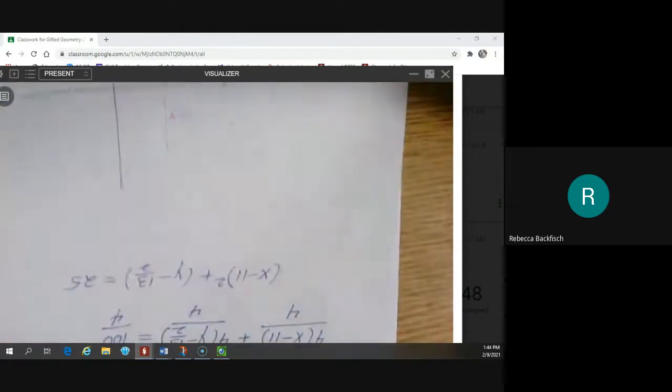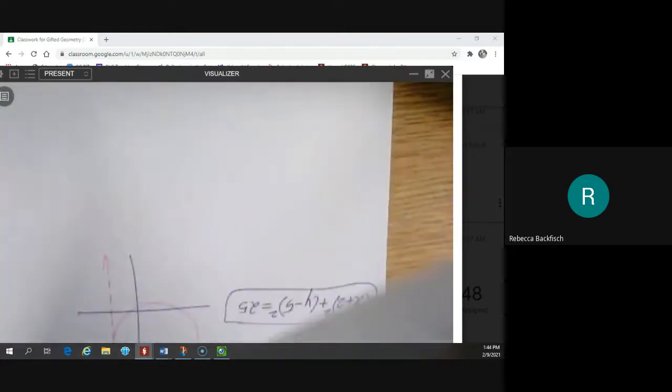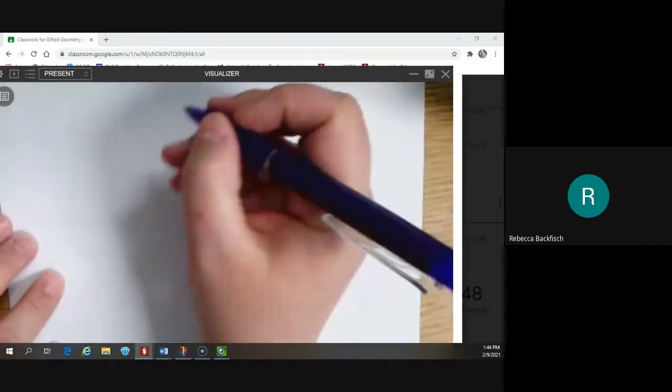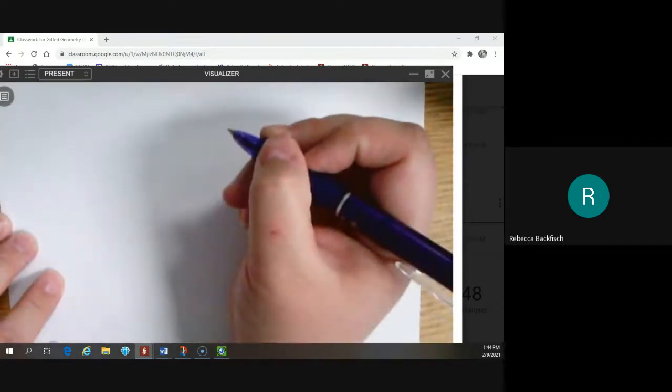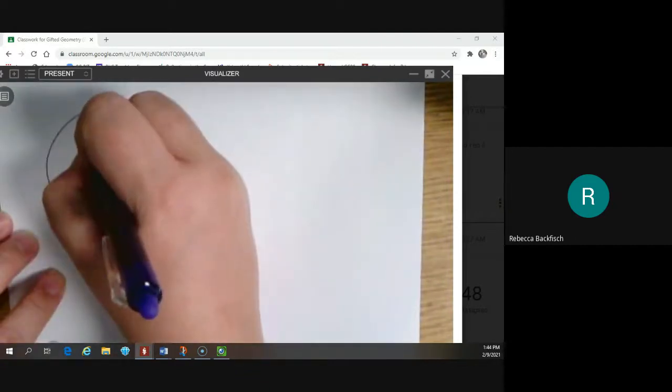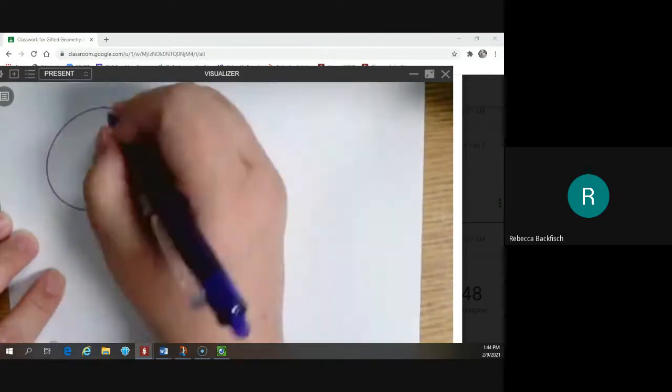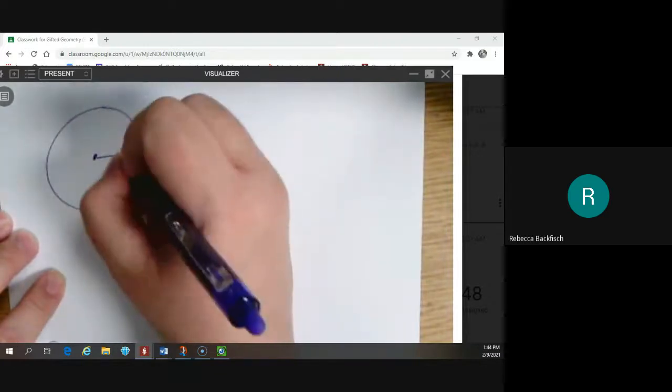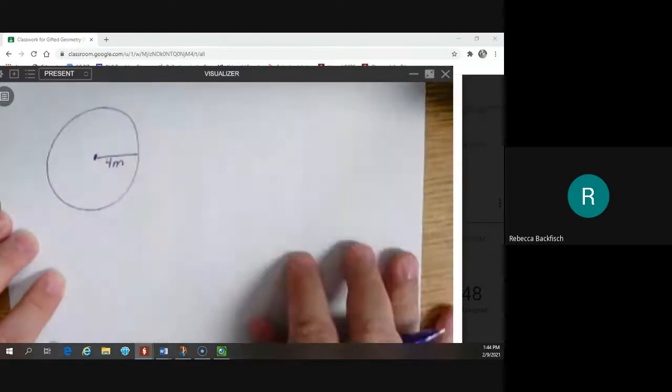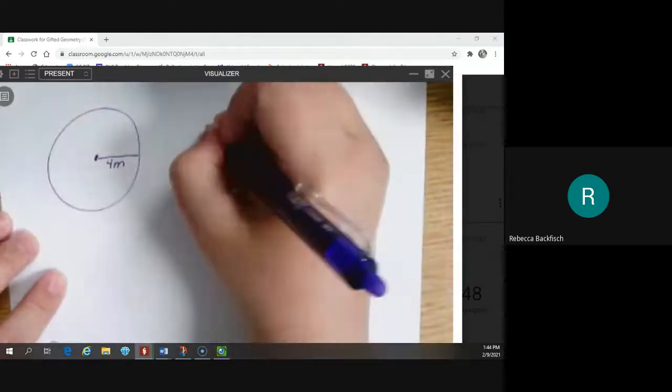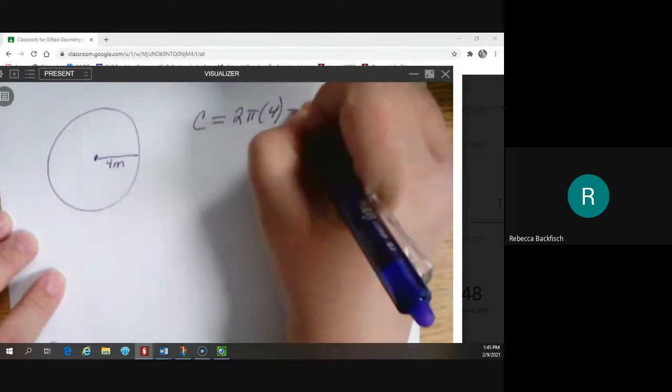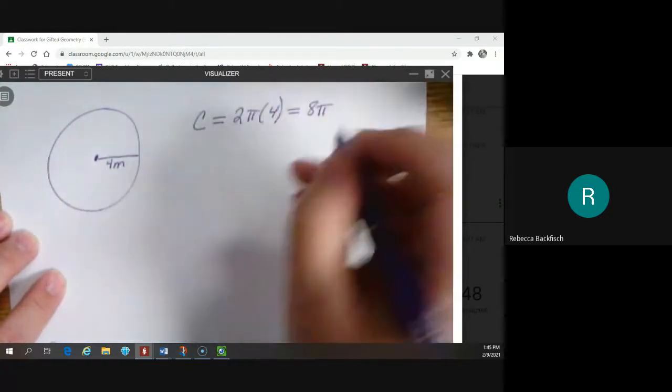We're not going to write anything here. I just want you to follow along with me thinking, thinking aloud here. Let's say I have a circle. Rylan, are you trying to talk to me? No. Okay. I just saw your mouth. Let's say I have a circle that has a radius of four meters. The circumference of that circle is two times pi times four. So it's eight pi meters, right?